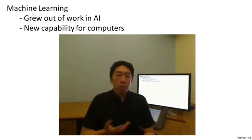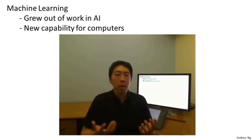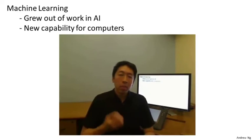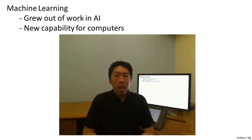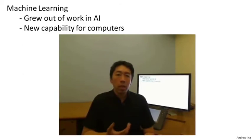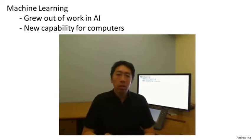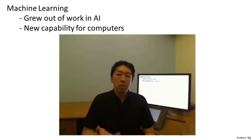I work on machine learning, and in a typical week I might end up talking to helicopter pilots, biologists, computer systems people — my colleagues here at Stanford. Averaging two or three times a week, I get email from people in Silicon Valley who have an interest in applying learning algorithms to their own problems. This is a sign of the range of problems that machine learning touches: autonomous robotics, computational biology, and tons of things in Silicon Valley.